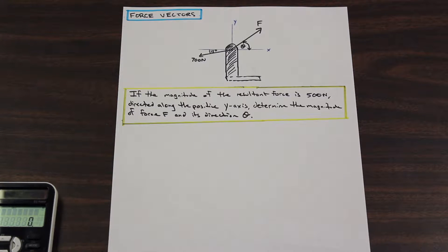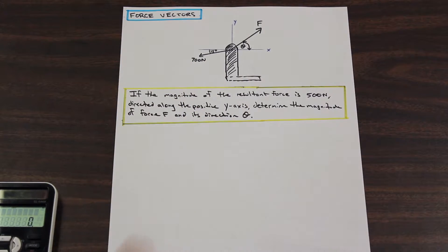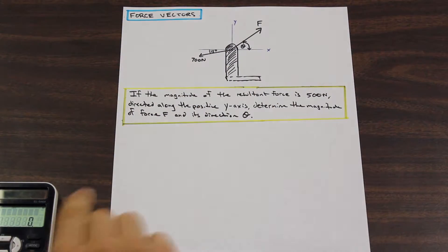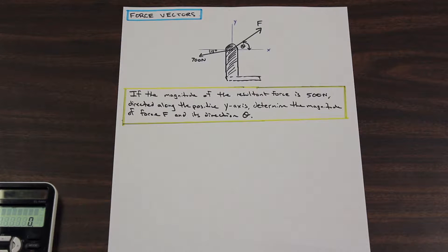Alright, with that being said, let's take a look at what we have today. So, we're continuing force vectors. I made a little sketch up here — hopefully it's visible for you guys, nice and clear. The question states: if the magnitude of the resultant force is 500 newtons directed along the positive y-axis, determine the magnitude of force F and its direction theta.